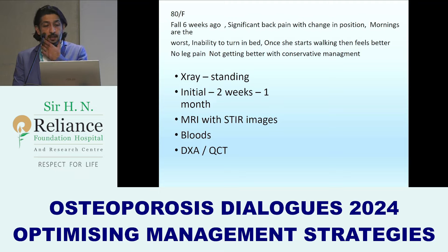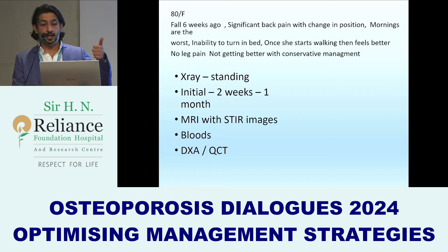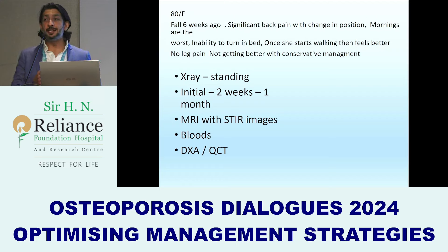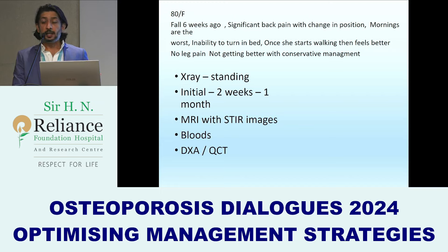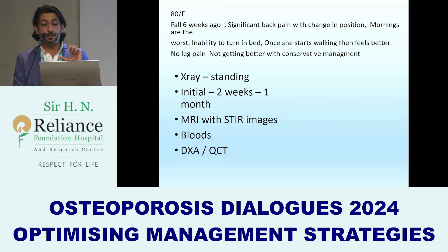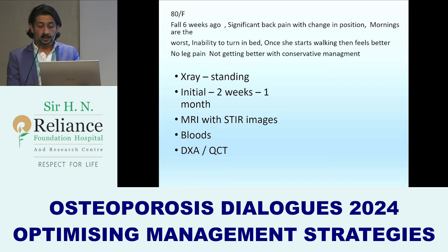For example, an 80-year-old female who had a fall six weeks ago with significant back pain on change in position. They always say mornings are the worst — getting out of bed is the worst. A lot of these patients need to wake up at night to go to the washroom, so getting out of bed at night is very difficult. Turning in bed gets very difficult. They also say that once they start walking they feel better, but that initial change in movement is difficult. If the patient does not have any leg pain, radiculopathy, or neurological deficits, then these are the patients where I would want to do a vertebroplasty.